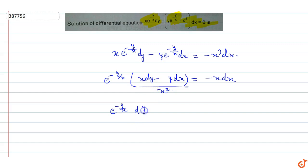After dividing by x squared, the expression e^(-y/x) · d(y/x) equals minus x dx. Now we integrate both sides.